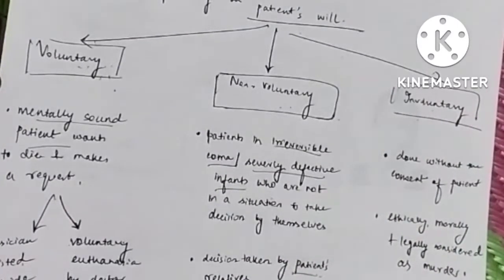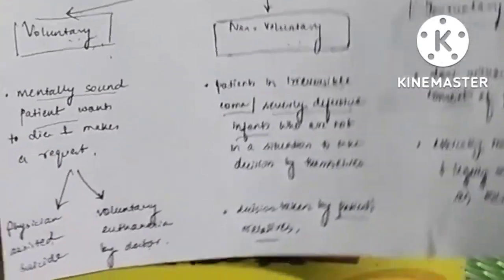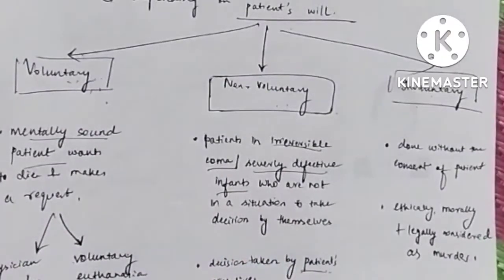Now we have involuntary euthanasia. This means that there is no role of the consent of the patient here. The physician himself will take the decision. Now this is legally, ethically, and morally considered as murder. Now we move on to the arguments in favor or against of euthanasia.